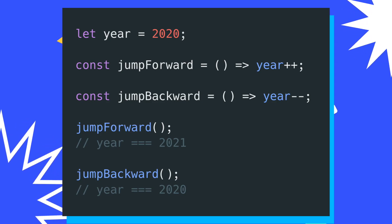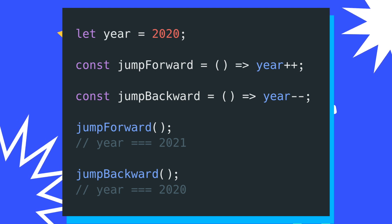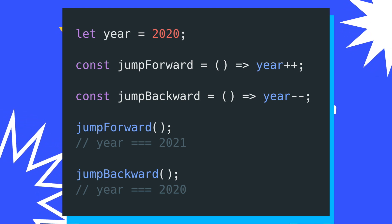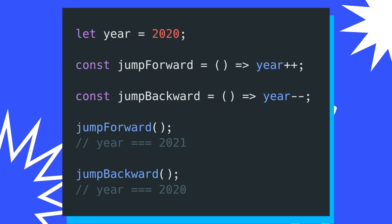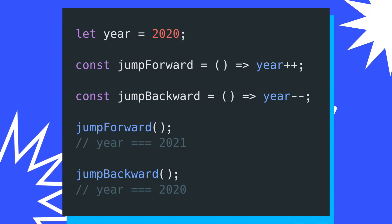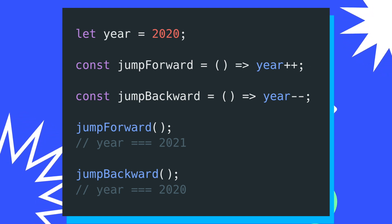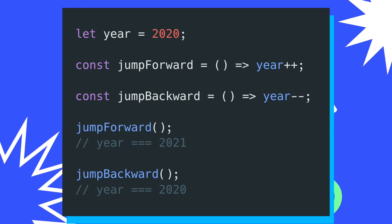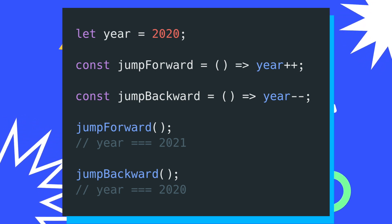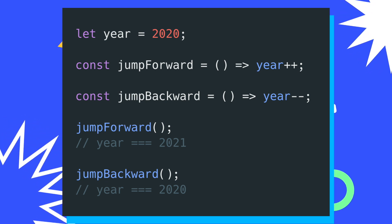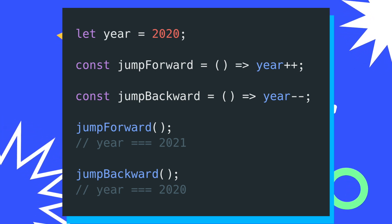With this code block example, we can see that I create a new variable called year with the value of 2020, and then after that I create two new functions — jump forward and jump backward — where both functions use either the increment or decrement operator. When I call jump forward, the value of year gets increased to 2021, and when I call jump backward after that, the value decreases back down to 2020.